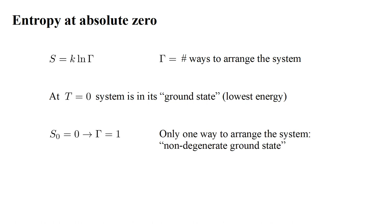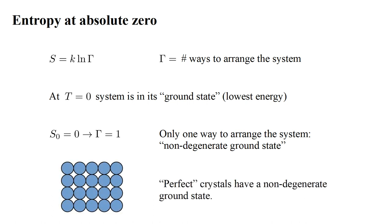Let's denote entropy at absolute zero by S zero. If S zero equals zero, then gamma must equal one. There is only a single way to arrange the system. And we say the ground state is non-degenerate. Generally speaking, perfect elemental crystals, crystals of a single element, with no crystal defects, have non-degenerate ground states.